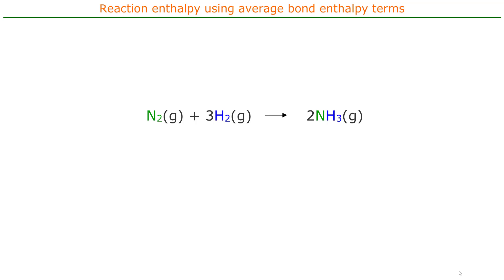This is the reaction we're looking at. It's nitrogen reacting with hydrogen, N2 plus 3H2, to give 2NH3. So this is nitrogen plus hydrogen gives ammonia.